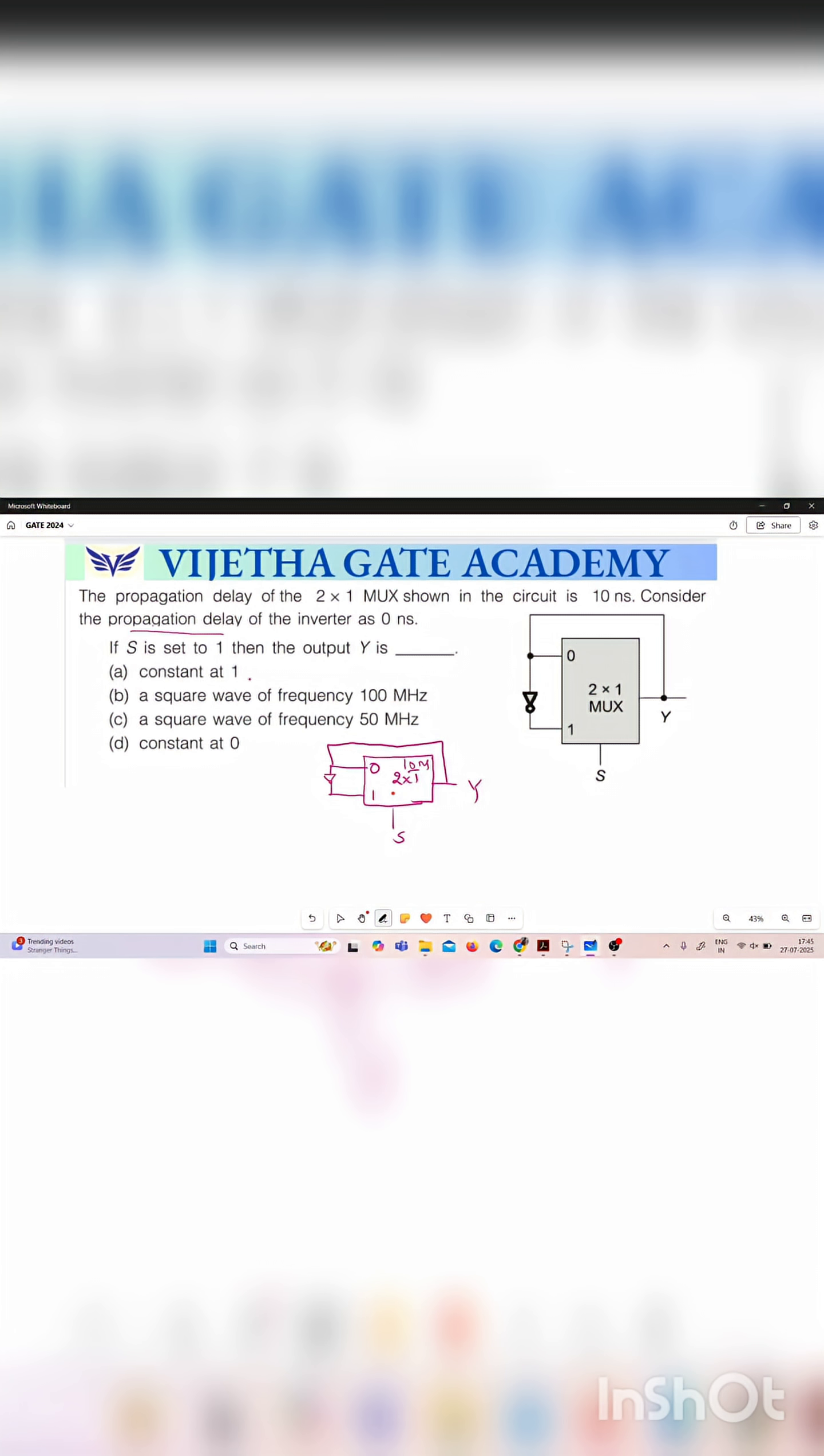So in this question if s is set to 1 then what is the output? If s means it is a selection line, if selection line s is equal to 0 then whatever the input that is connected to 0 that is reaching the output y.